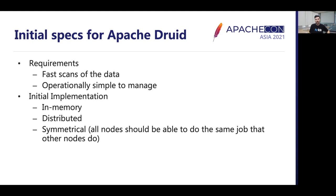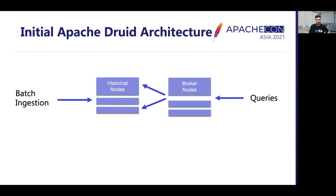Here are some key points from the initial Druid specification. The initial implementation consisted of keeping all data in memory for low-latency reads, distributing data across multiple nodes for parallel processing, and keeping data nodes symmetrical so all nodes can take part in query processing. The initial architecture consisted of two node types: historical nodes, which are the main workhorses of the Druid cluster, storing data in memory in a column-oriented, read-efficient format to quickly respond to user queries. Broker nodes were added for querying — they keep track of data chunks loaded on each node, scatter queries across multiple nodes, and gather and merge results to send back to the user.